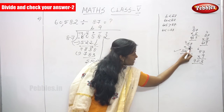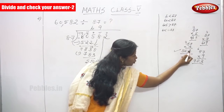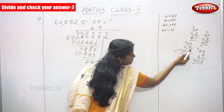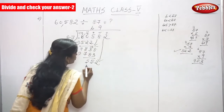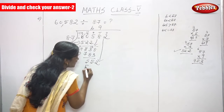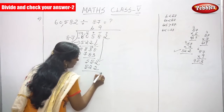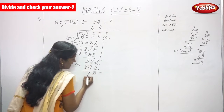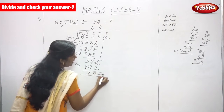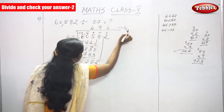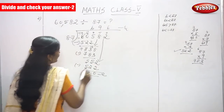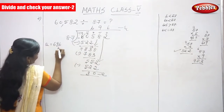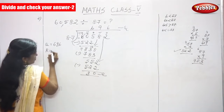I will repeat once again: 87 multiplied by 6 — 6 sevens are 42, write 2; remaining goes to top. 6 eights are 48, 48 plus 4 is 52. So 522 is less than 552, write 522. Now subtract: 2 minus 2 is 0, 5 minus 2 is 3 — that is the remainder 30. And the quotient here is 6. So quotient is 696 and remainder is 30.